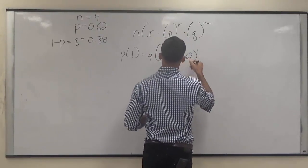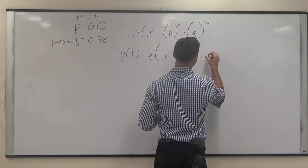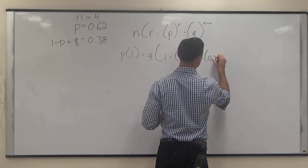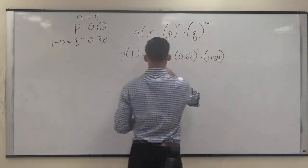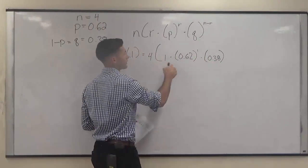times the event not occurring to the N minus R, so 4 minus 1.